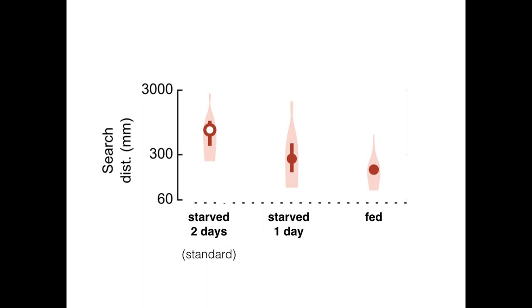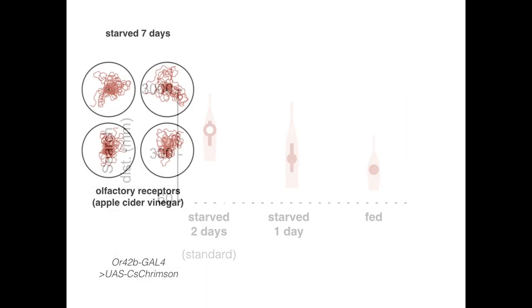When we subjected flies to more extreme starvation, we were able to trigger local searches by activating different kinds of neurons. In animals that underwent seven days of starvation, activation of OR42B-Gal4 olfactory neurons was able to elicit robust local searches.